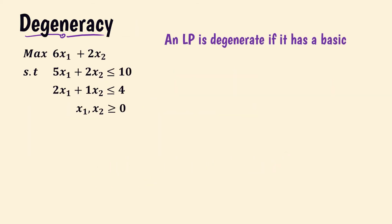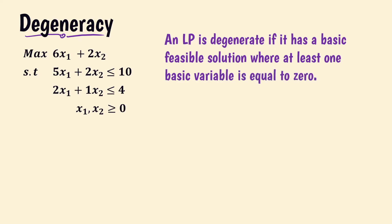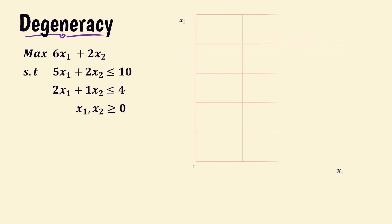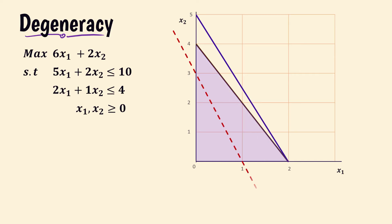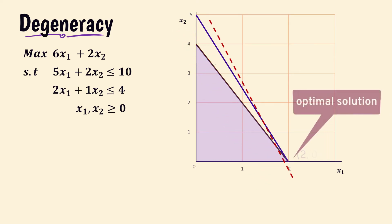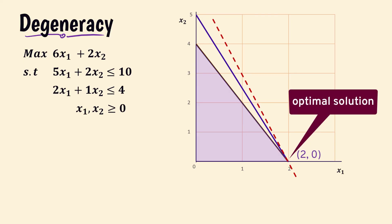Finally, we discuss degeneracy. An LP model is degenerate if it has a basic feasible solution where at least one basic variable is equal to zero. Consider this LP model. On constructing the graph, we see that the optimal solution occurs at (2, 0), that is, x2 equals zero at the optimal solution.